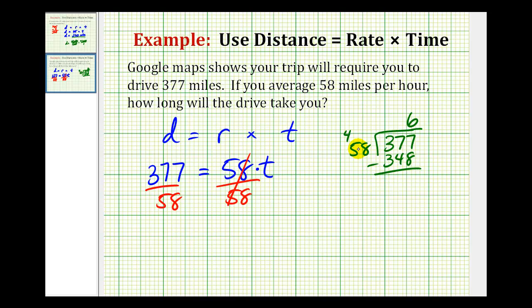Remember, as long as this difference is less than 58, this 6 is correct. So here we have to borrow from the 7. We have 17 minus 8, it's going to give us 9. 6 minus 4 is 2. 29 is less than 58, so the 6 is correct.